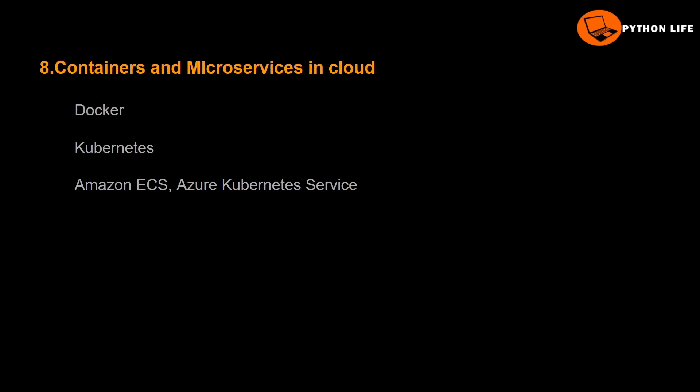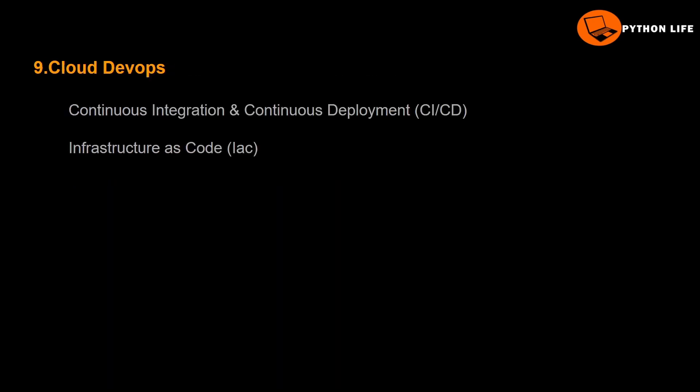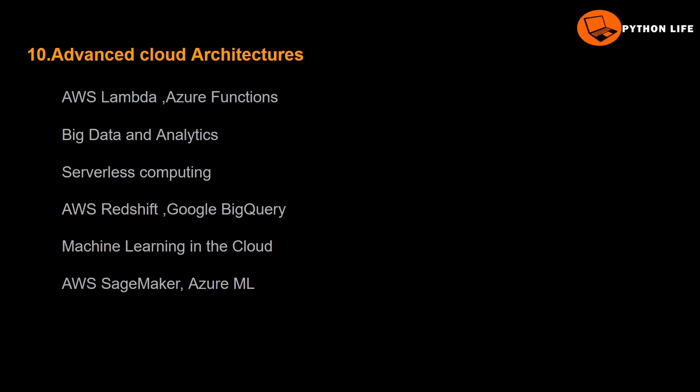Then: Containers and Microservices in Cloud. Kubernetes is very famous. Docker, Amazon ECS, Azure Kubernetes Service — these will be used. Then, Cloud DevOps — DevOps is trending. Continuous Integration and Continuous Deployment. You will also have projects and a resume. Infrastructure as Code is also included here.